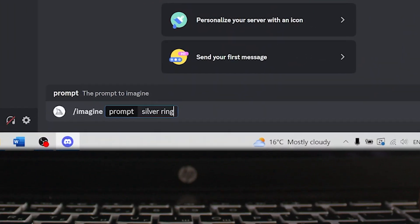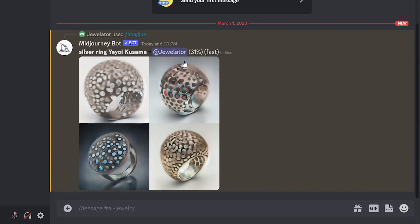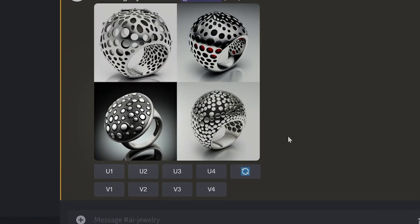To start my work, I run the chatbot mid-journey and set the prompt silver ring Yayoi Kusama. The program offered me four options. I chose the one I liked best.